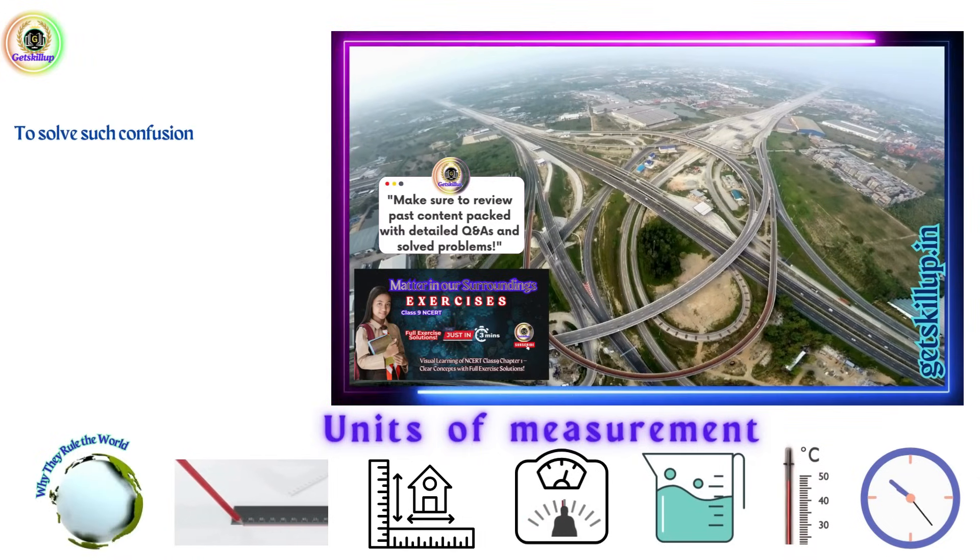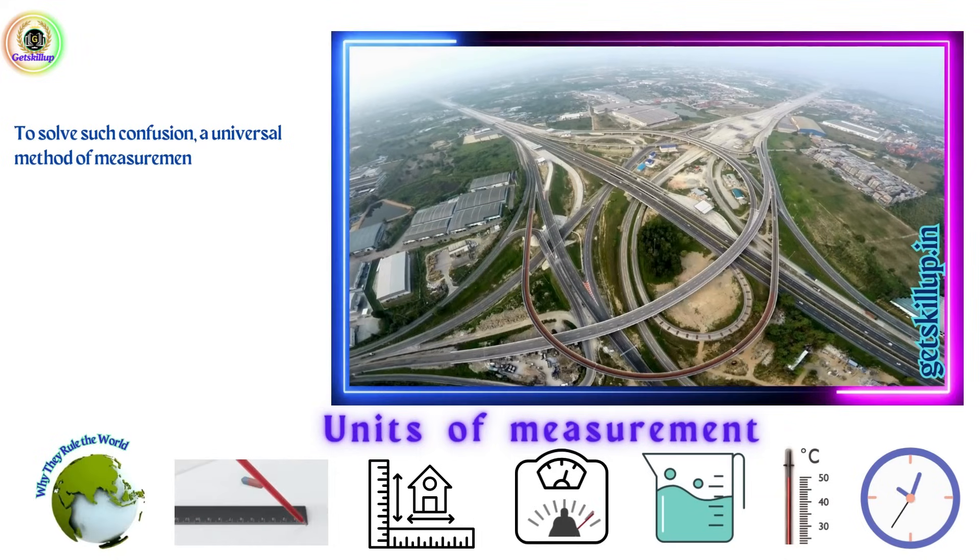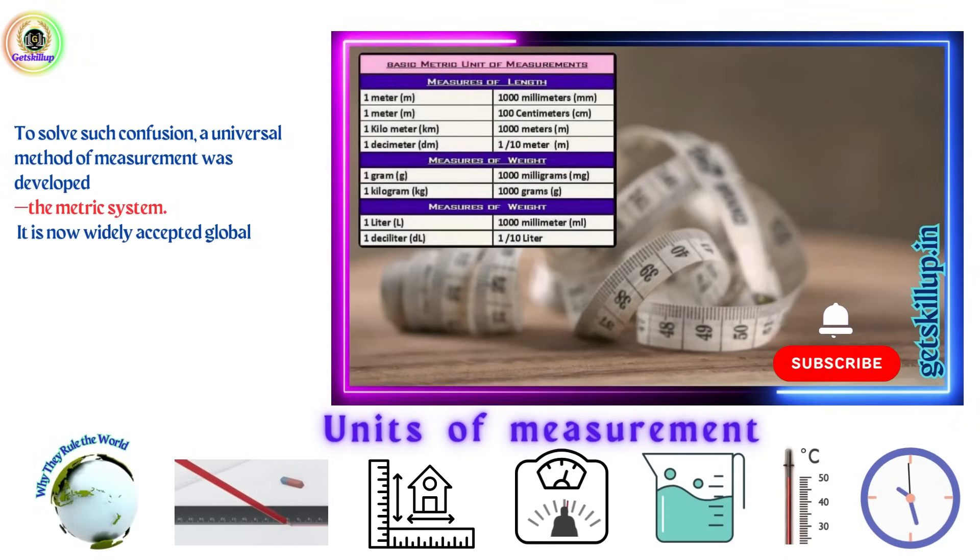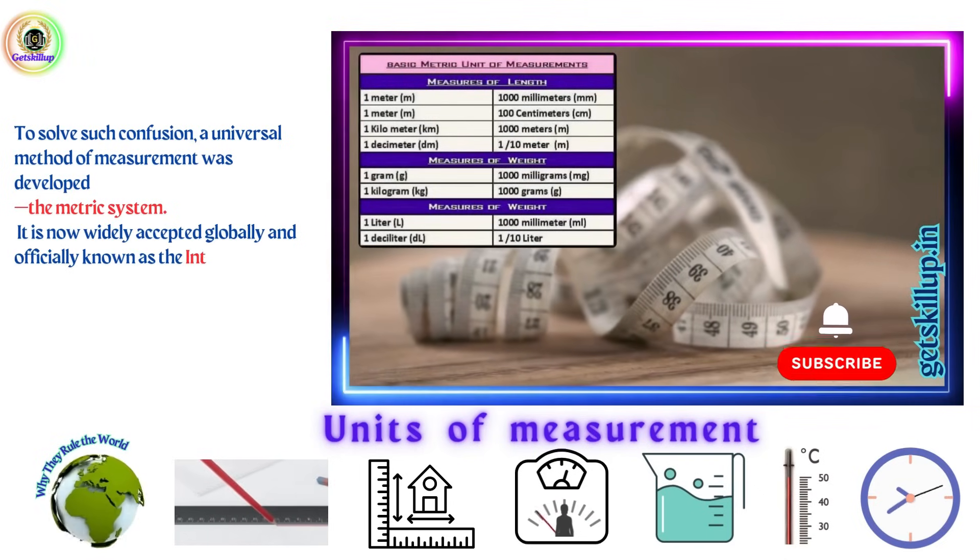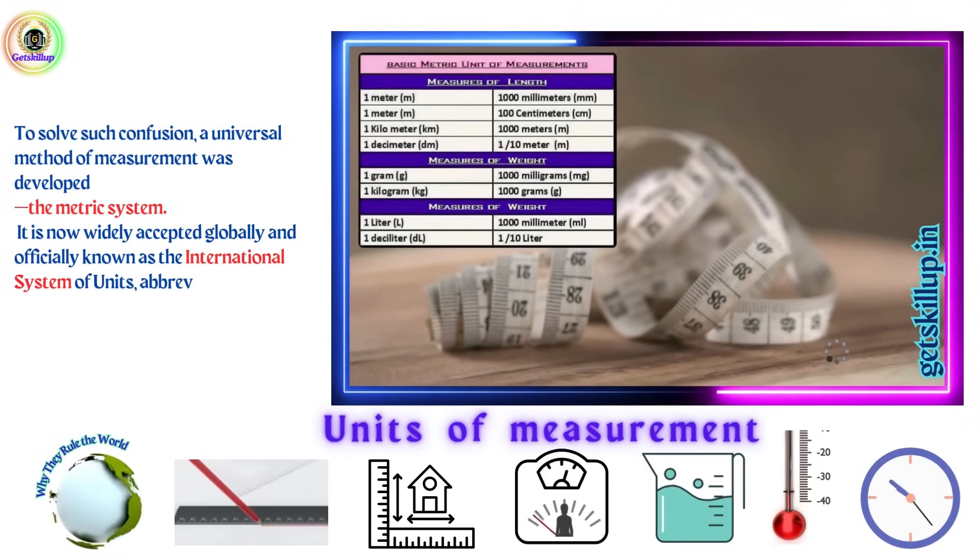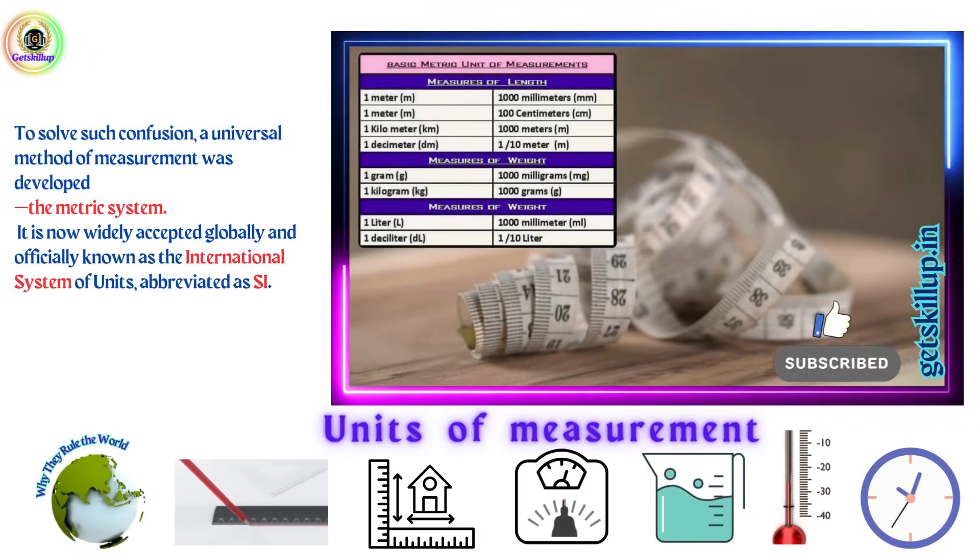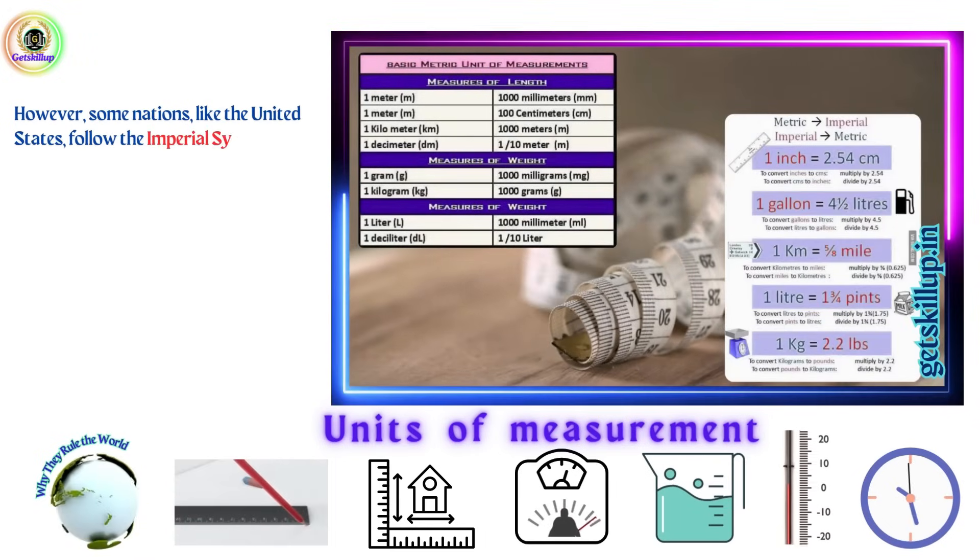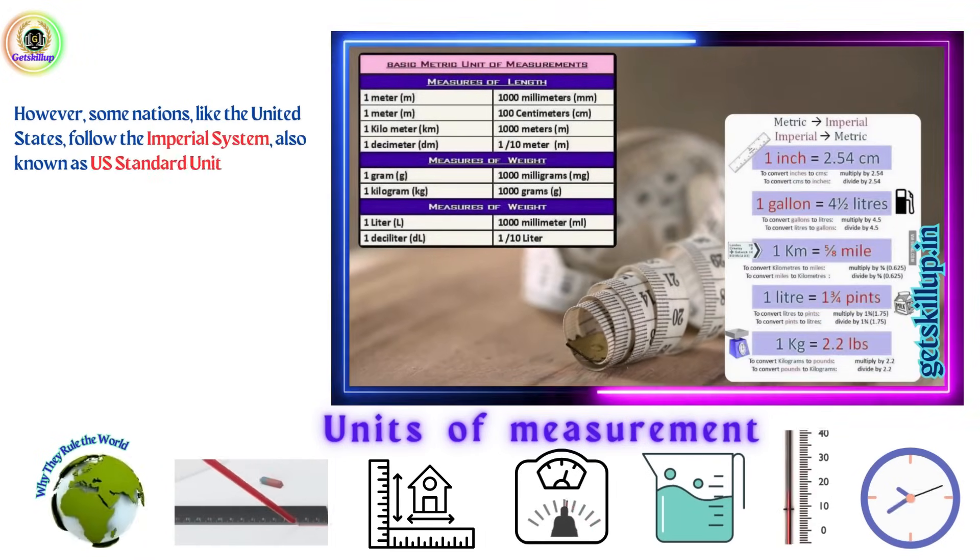To solve such confusion, a universal method of measurement was developed, the metric system. It is now widely accepted globally and officially known as the International System of Units, abbreviated as SI. However, some nations, like the United States, followed the Imperial System, also known as US Standard Units.